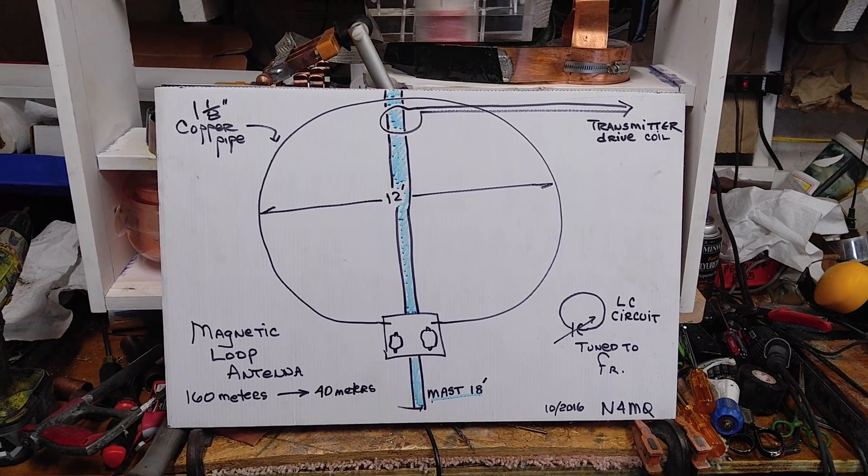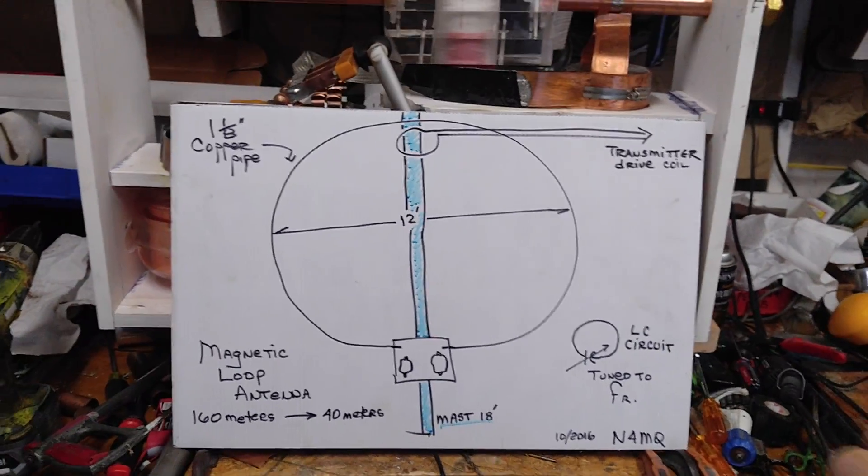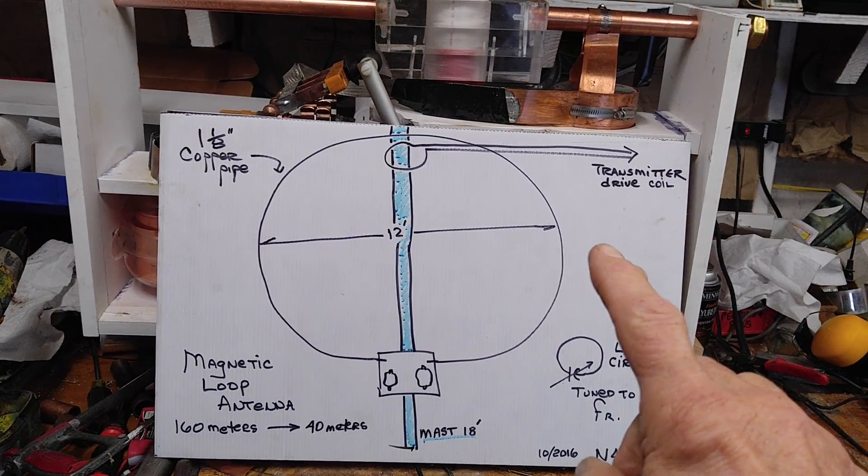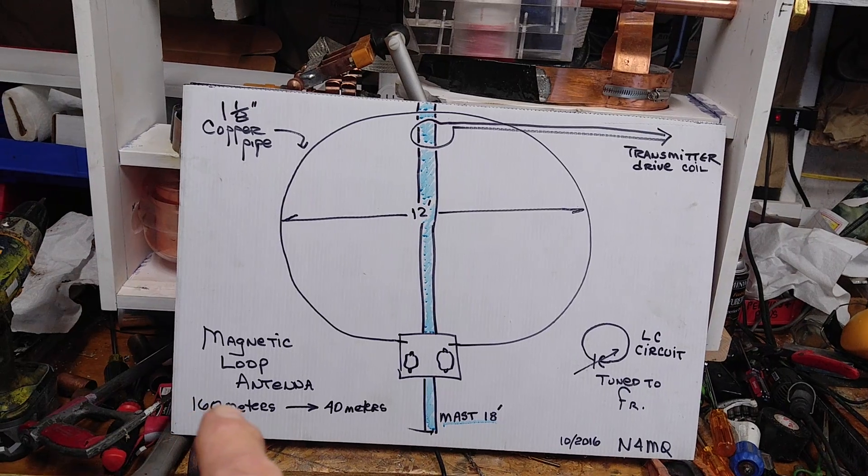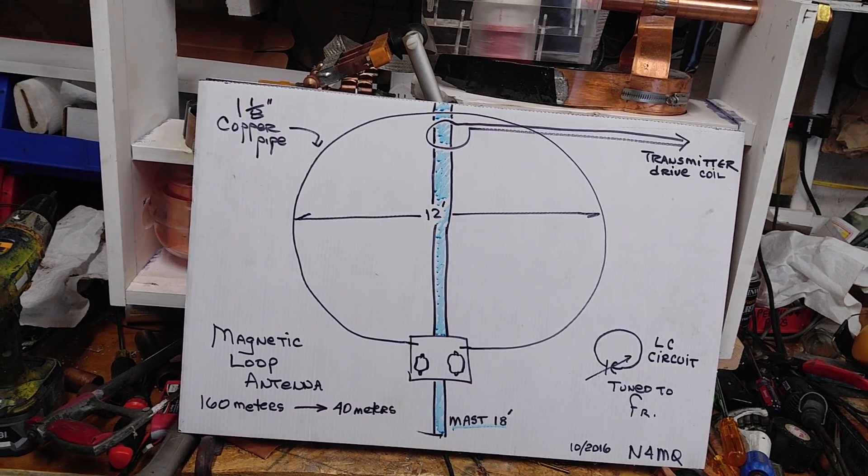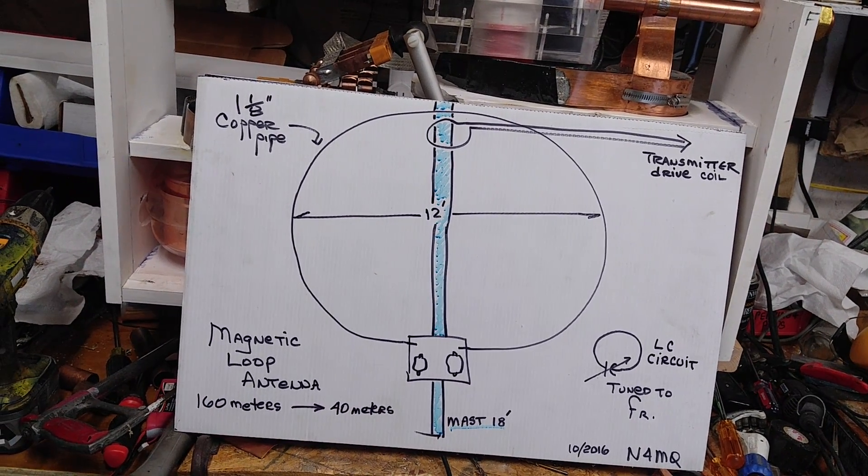This is basically a quick sketch of what my antenna looks like. The antenna is 12 foot in diameter. It's one and an eighth inch copper. It's a magnetic loop that I run from 160 meters to 40 meters, and basically it's got a capacitor that tunes it.